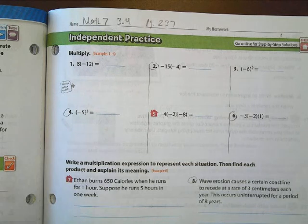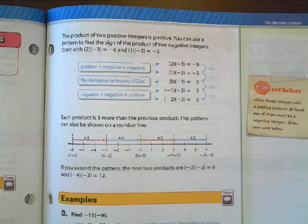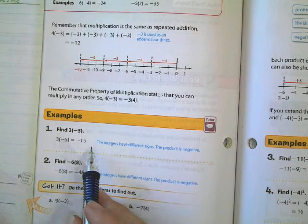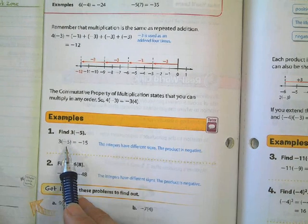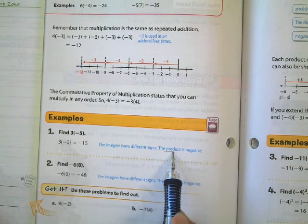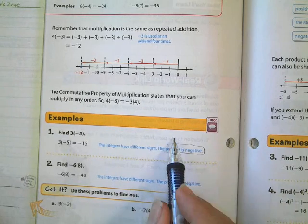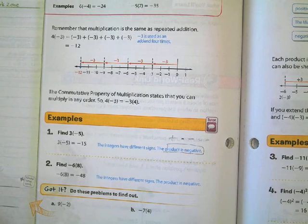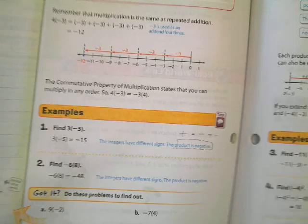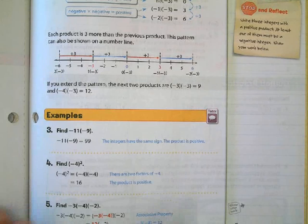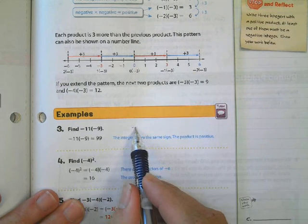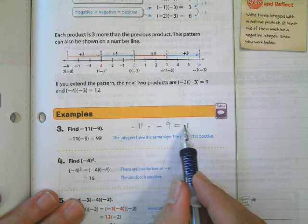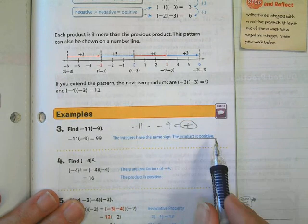The key thing with multiplying integers, if you remember back to your lesson today, is that when you multiply integers that have different signs, like a 3 times a negative 15, then the product is negative. So a positive times a negative will end up with a negative answer. But if the signs happen to be the same, like a negative 11 times a negative 9, then we end up with a positive solution. The product will be positive.